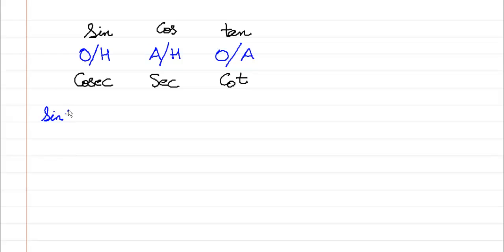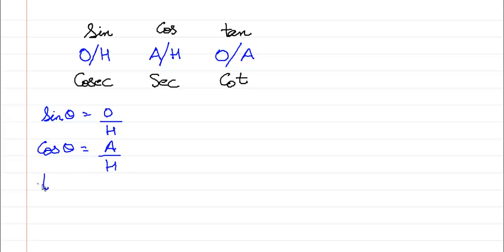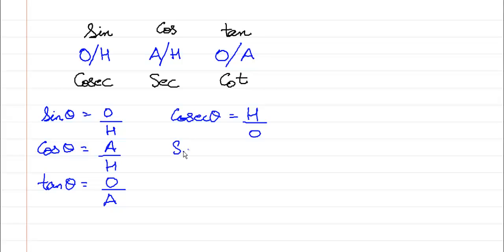So I can write: sin theta is equal to opposite upon hypotenuse, cos theta is equal to adjacent upon hypotenuse, tan theta is equal to opposite upon adjacent. In the very same way, cosec theta is equal to hypotenuse upon opposite, sec theta is equal to hypotenuse upon adjacent, and cot theta is equal to adjacent upon opposite.